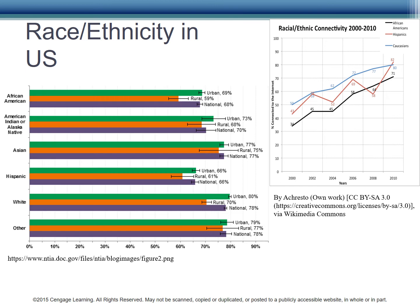Let's add race and ethnicity to location — urban versus rural — and see if we can glean anything interesting. Across all races and ethnicities, rural populations have lower access rates than their urban peers. As more broadband, cable, and DSL access moves to rural areas, hopefully this gap will decrease.